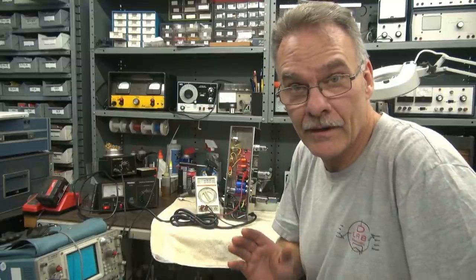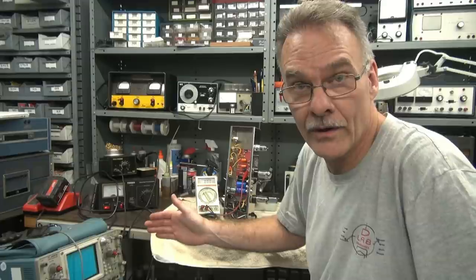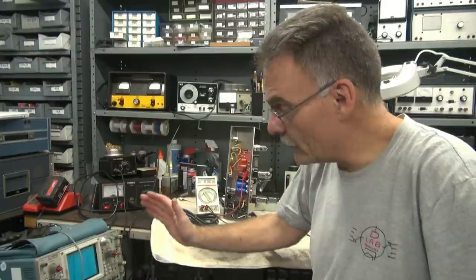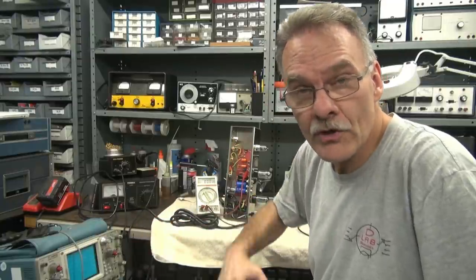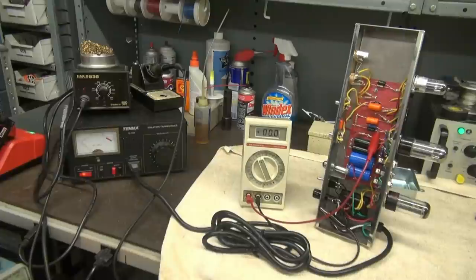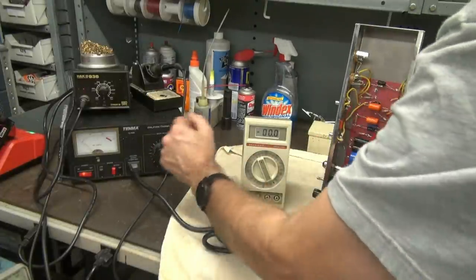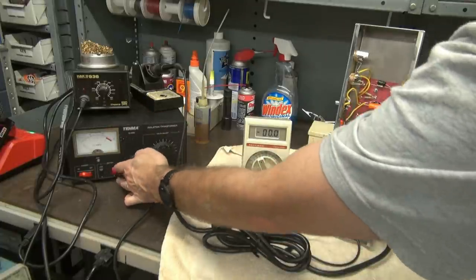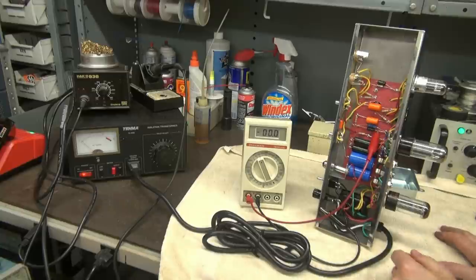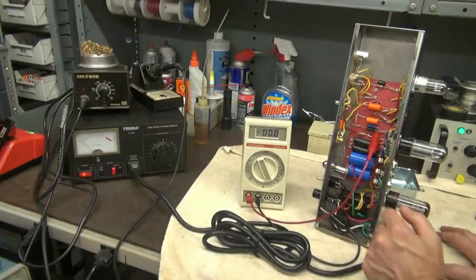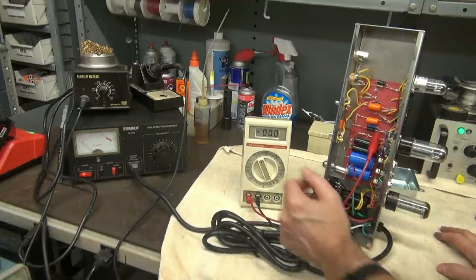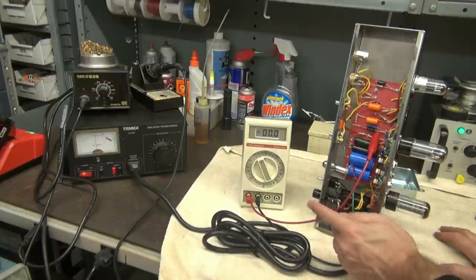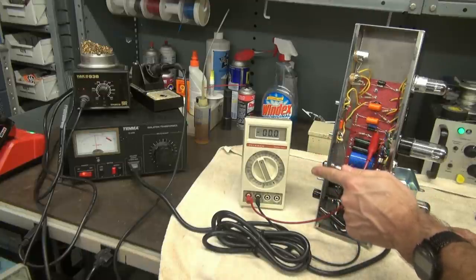It's checkout time. I've got it on Variac for the initial power up so I can make sure it doesn't draw excessive current. Once that's good, we're going to hook up my scope and audio generator and take a look at that output. I bring her up on the Variac nice and slow. There's 50 volts, monitor the current. The amp is on and I'm monitoring the bias with this multimeter. We're going to let it warm up.